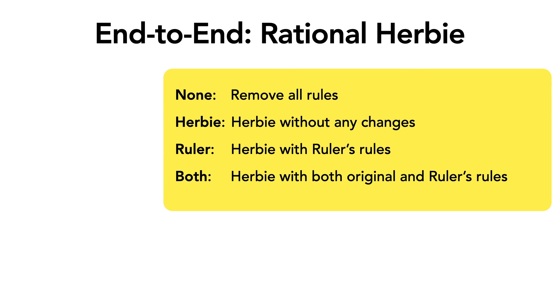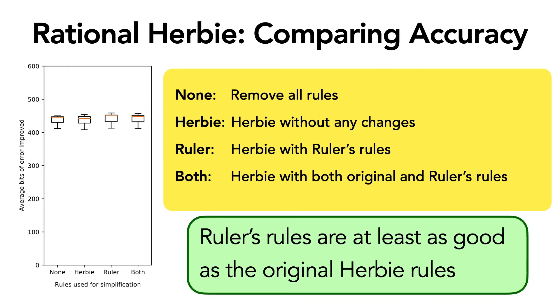We are also interested in an end-to-end evaluation of Ruler. For that, we integrated Ruler's rules with Herbie and applied four different treatments. First, we removed all the rational rules from Herbie. Then we ran Herbie without any changes. Then we ran Herbie only with the rules found by Ruler. And then finally we ran Herbie both with its original rule set and the rules from Ruler.